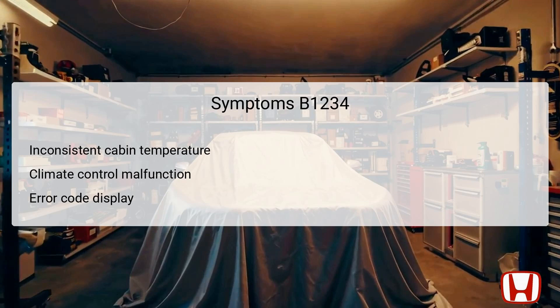The symptoms associated with DTC B1234 can significantly impact the driving experience. Drivers may first notice an inconsistent cabin temperature — the vehicle could blow hot air when cool air is expected, and vice versa. Owners might also experience a complete malfunction of the climate control system, where controls may seem unresponsive. Additionally, the presence of error code B1234 on the dashboard indicates a specific malfunction that needs attention. Intermittent issues may lead to surprise temperature swings, even when controls are correctly set.